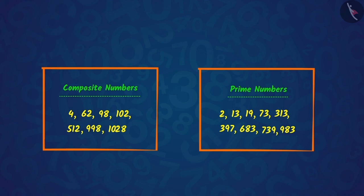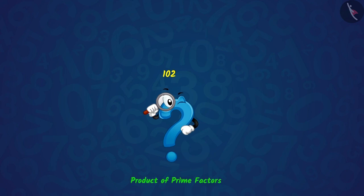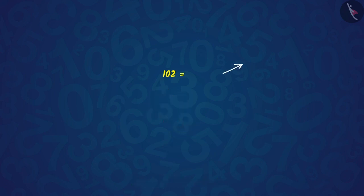Now, if we choose any one of these numbers, suppose 102 and proceed, then can you write 102 as the product of its prime factors? 102 can be written as the product of its prime factors, i.e., 2, 3 and 17. Well done!